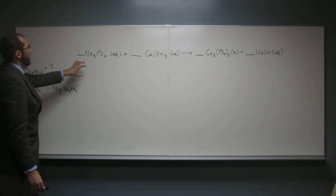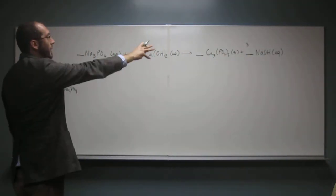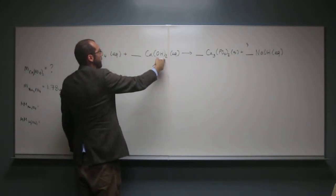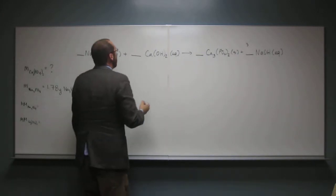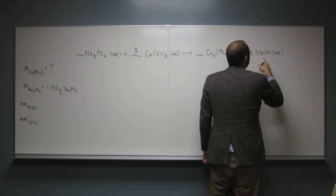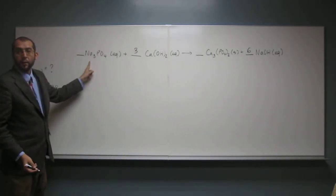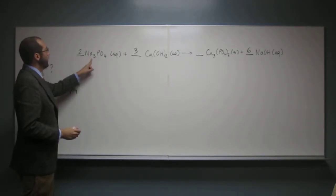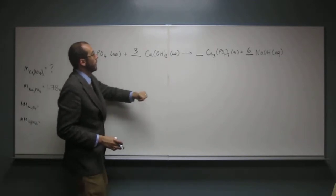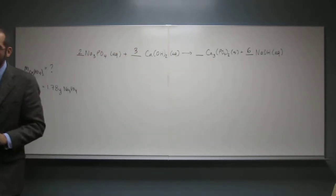We've got three sodiums on the left side, but only one on the right. So we put a three there. That gives us three OHs, but we have two OHs on the other side — two and three don't divide evenly. So we put a three on the Ca(OH)₂ side, giving us two times three equals six OHs. We put a six on the NaOH side for six OHs. Now we have six sodiums, but only three on the left, so we put a two in front of Na₃PO₄ — two times three is six. Phosphate: we've got two on each side, that's good. Calcium: we've got three on each side. The equation is balanced.